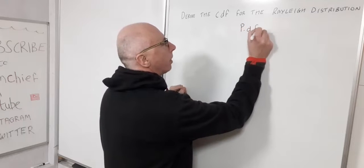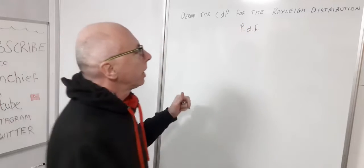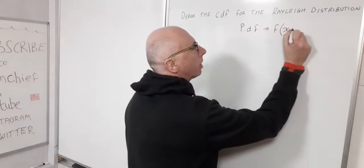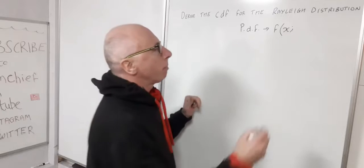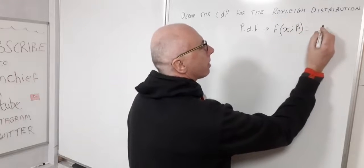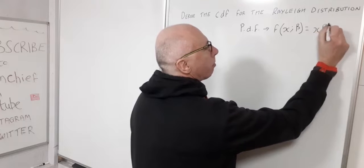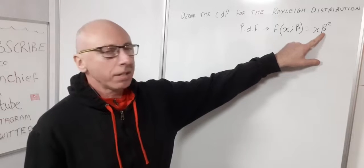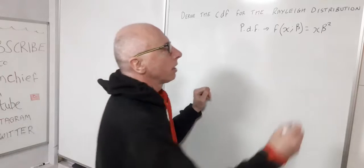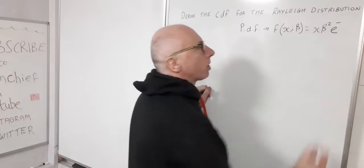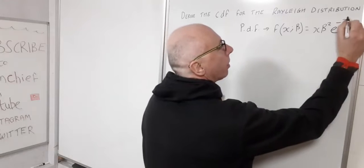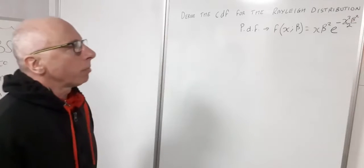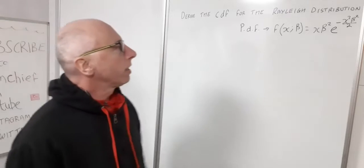The PDF is a function of X, which is our random variable, and it has one parameter beta. It is X times beta squared — that's our random variable times our parameter. Beta is a scale parameter, and we multiply that by the exponential to the negative power of the random variable and the scale parameter, all squared divided by two. That's the PDF for the Rayleigh distribution.